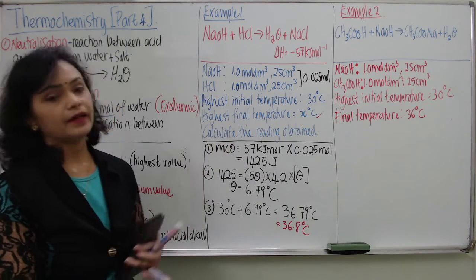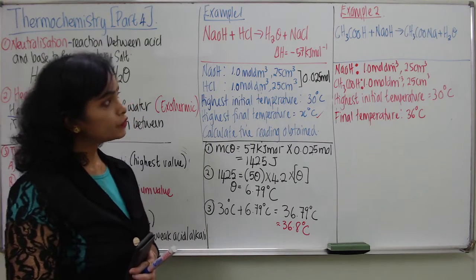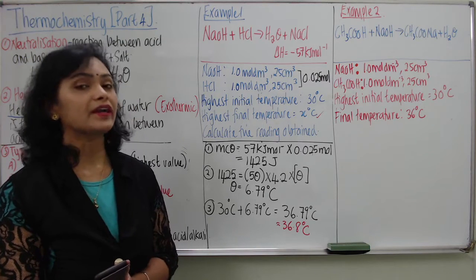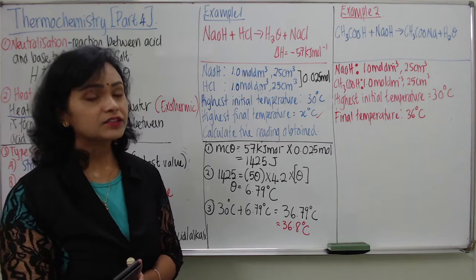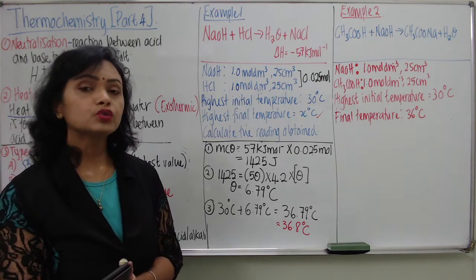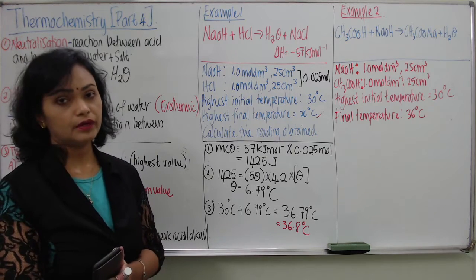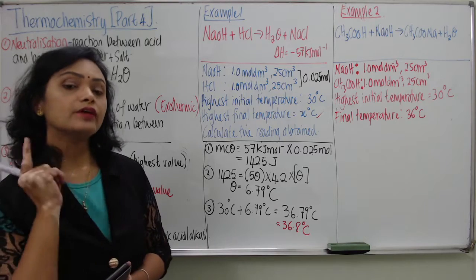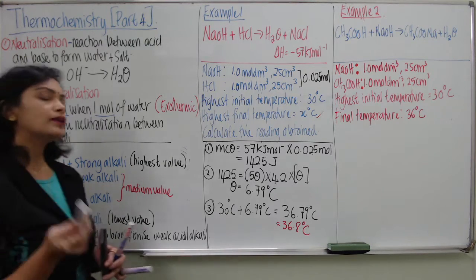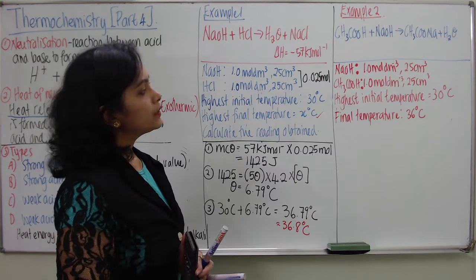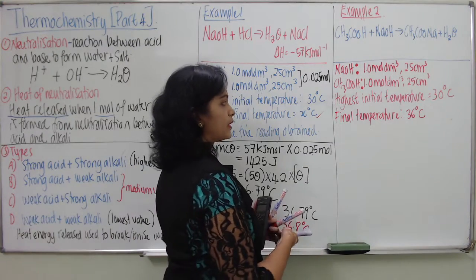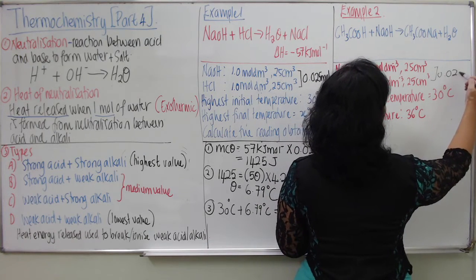Now let's look at the second example. Teacher has used ethanoic acid — students, you must know by now the profile of ethanoic acid. Ethanoic acid is a classic example of a weak acid, which ionizes partially in water to produce a low concentration of hydrogen ions. It is being mixed with sodium hydroxide, which is a strong electrolyte. So we are going into the weak acid and strong alkali combination. Volume and concentration of ethanoic acid and sodium hydroxide are already given, so you can pre-determine the moles as 0.025 mol.